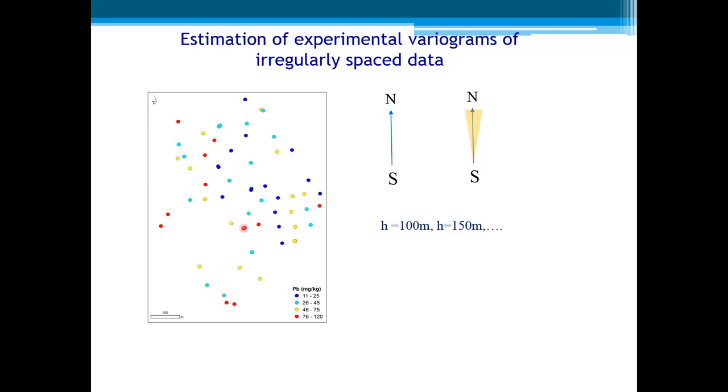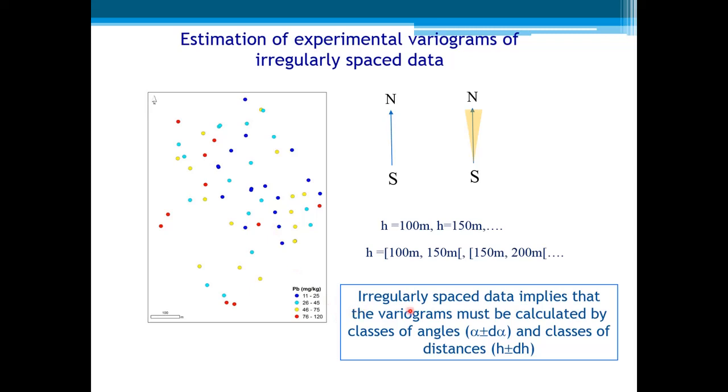Identical situation for the distances h. Variograms for h equals 100 meters or 150 meters - we hardly find a pair of samples separated about exactly those 100 meters or 150 meters. But if we define classes of distance, say h between 100 meters and 150 meters, another class of h between 150 and 200, and so on, we will succeed to find pairs of values of those classes. In short, the irregular spaced data implies that the variograms must be calculated by class of angles and classes of distances.